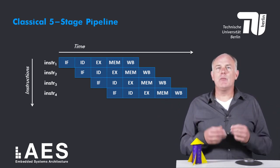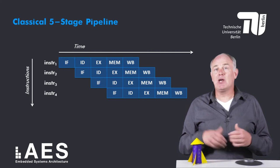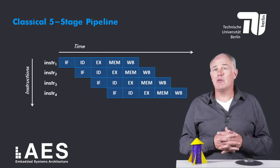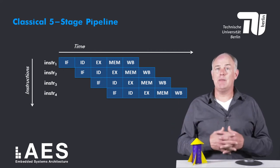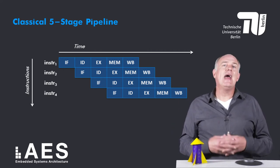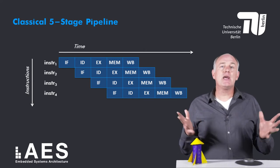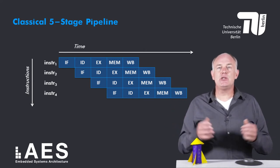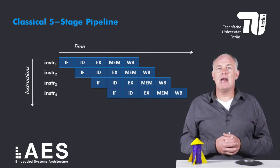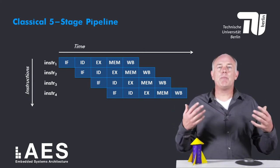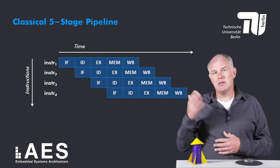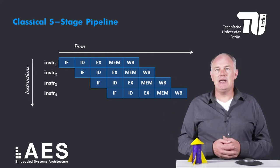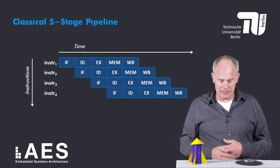Because there are five stages, the ideal speedup would be five compared to a non-pipelined processor. In practice the speedup will be less because first the amount of work in each stage is not perfectly balanced, and second because there are some issues with pipelining that cause the pipeline to stall from time to time. More about these issues I will explain in the next lesson.